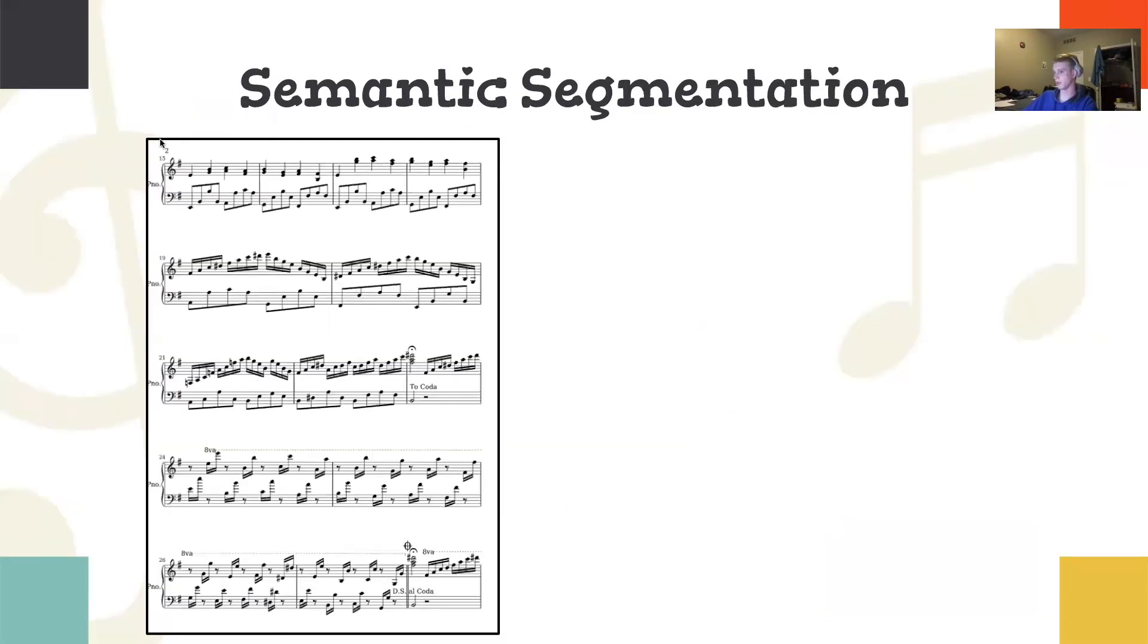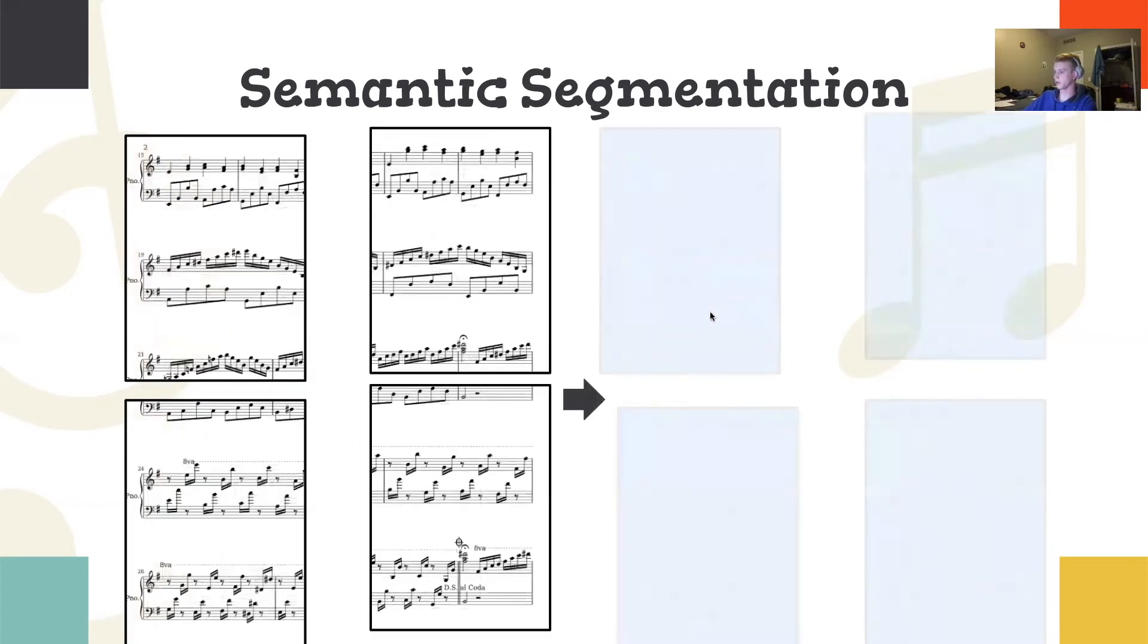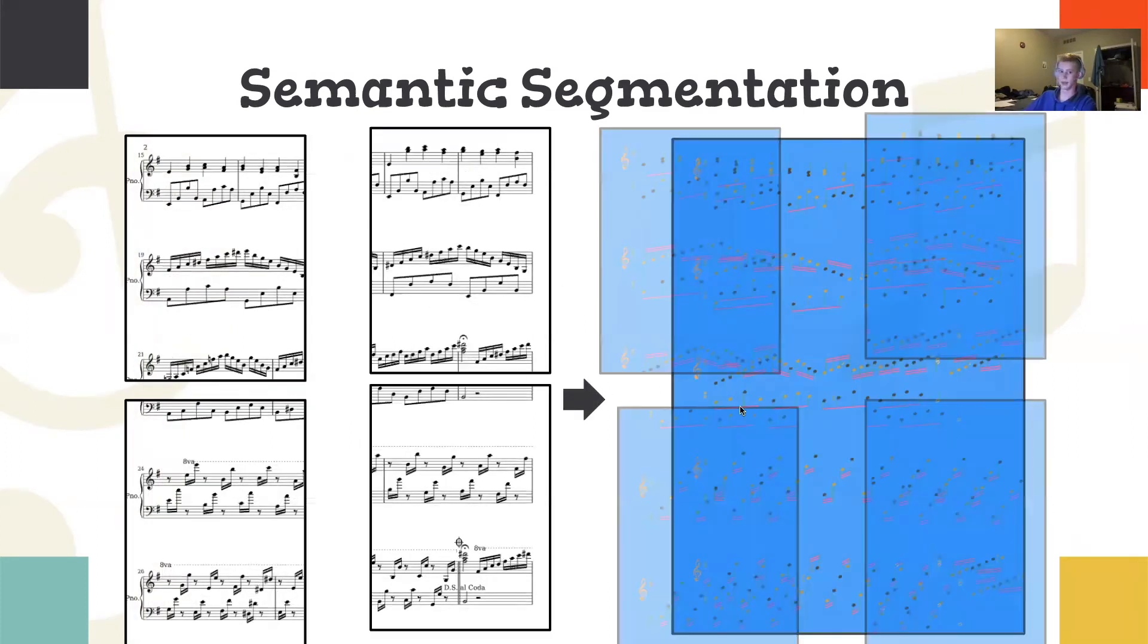And because we only trained the model on small sections of input, that meant when we wanted to find a semantic segmentation of the entire page of sheet music, we would first have to split it up, pass each individual part through the model, and then combine it in the end.